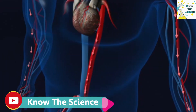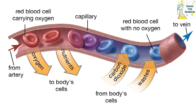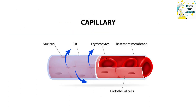The three major blood vessels are veins, arteries, and capillaries. Capillaries are the smallest blood vessels found in the human body. Their walls are one cell thick. About 10 of them equal the thickness of one human hair, and most are so small that only one blood cell can pass through at a time.